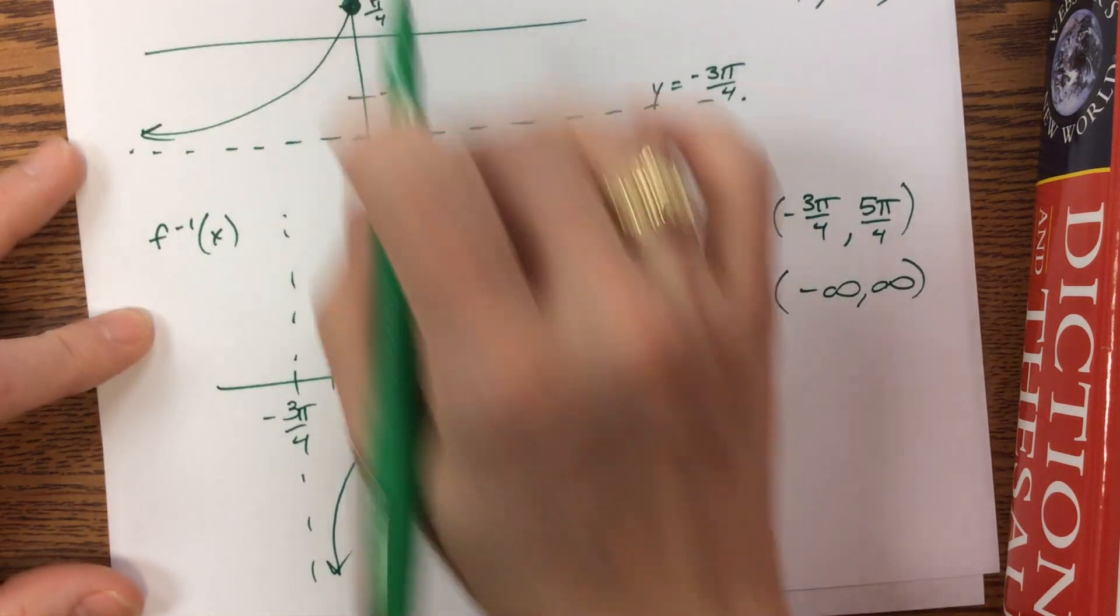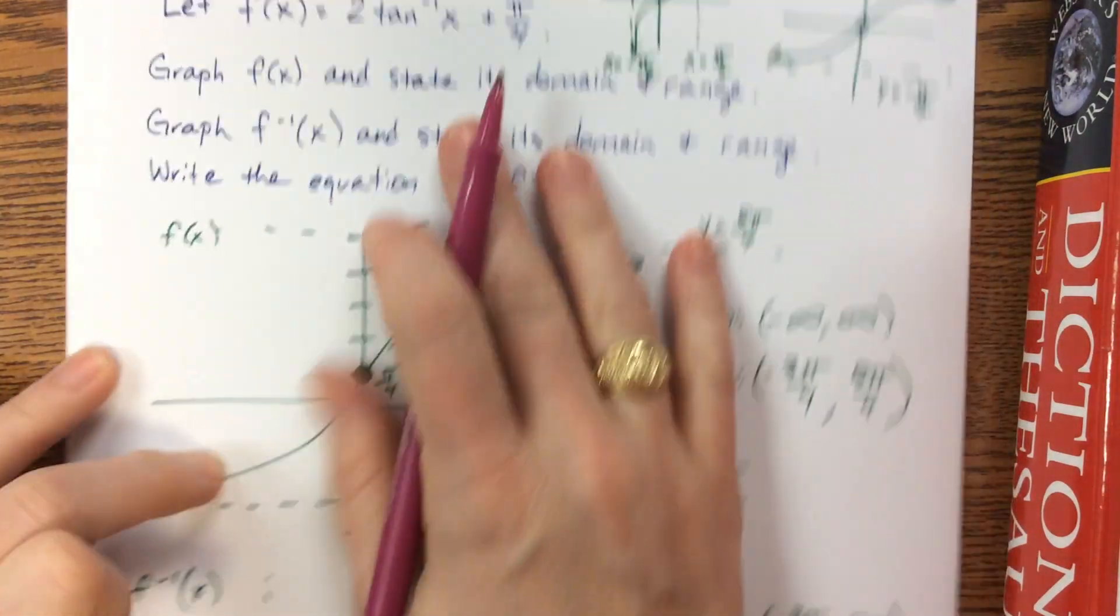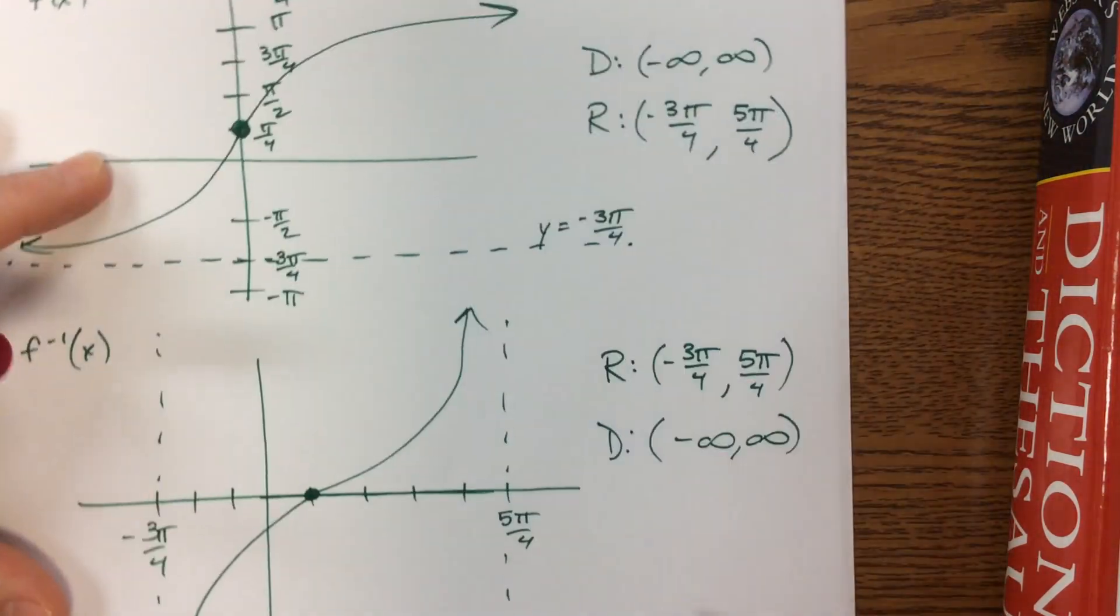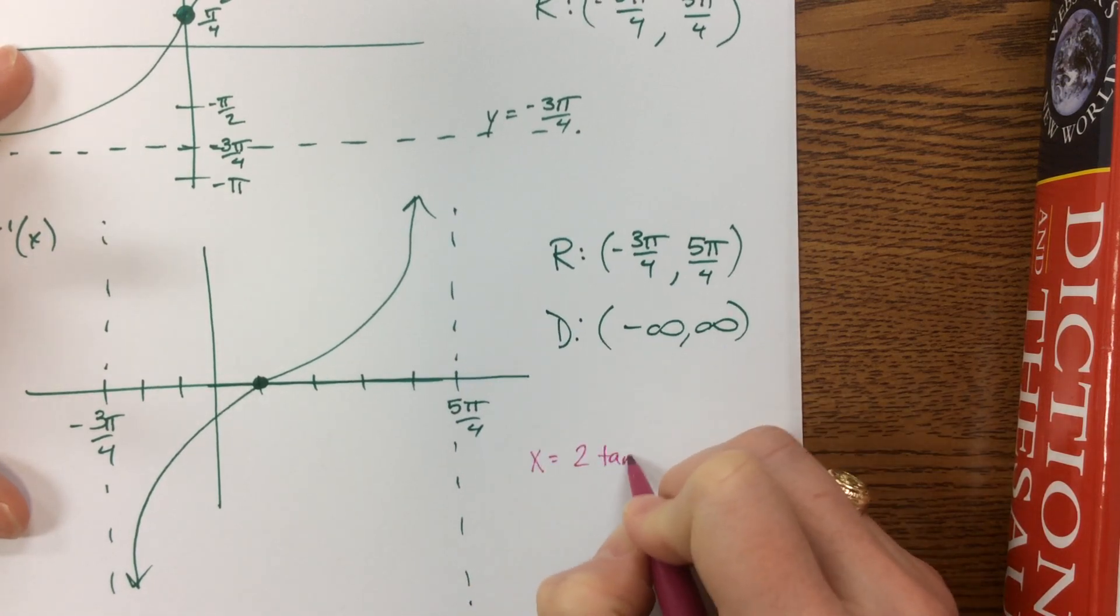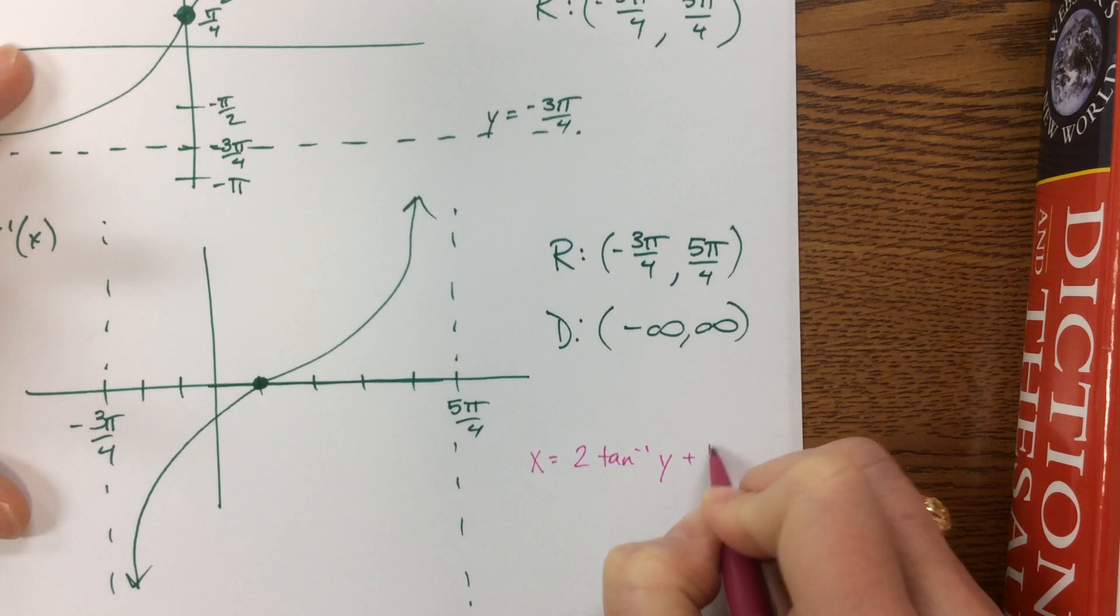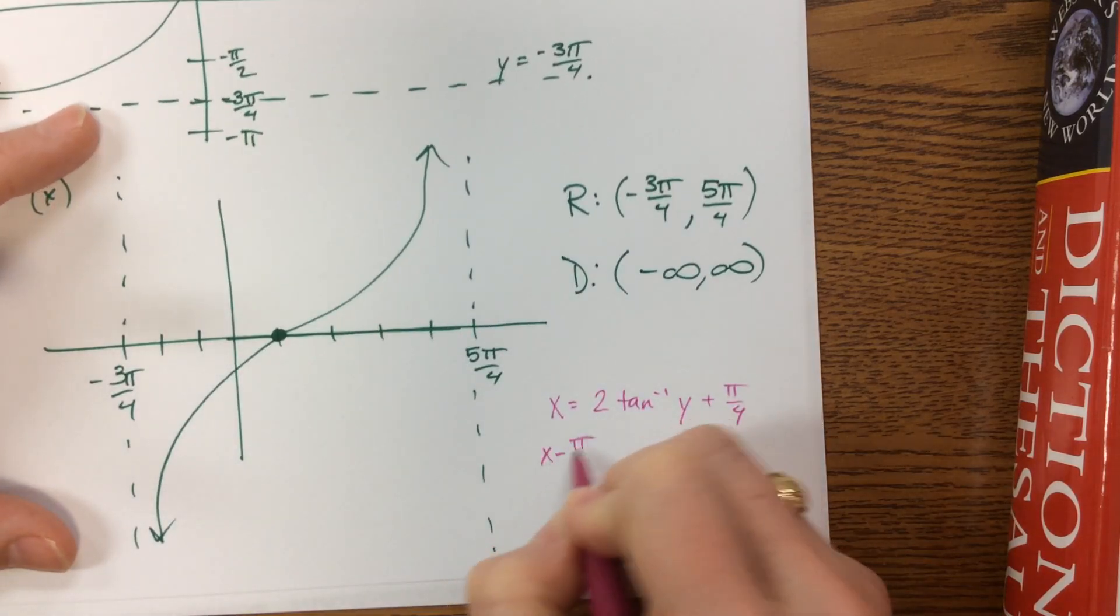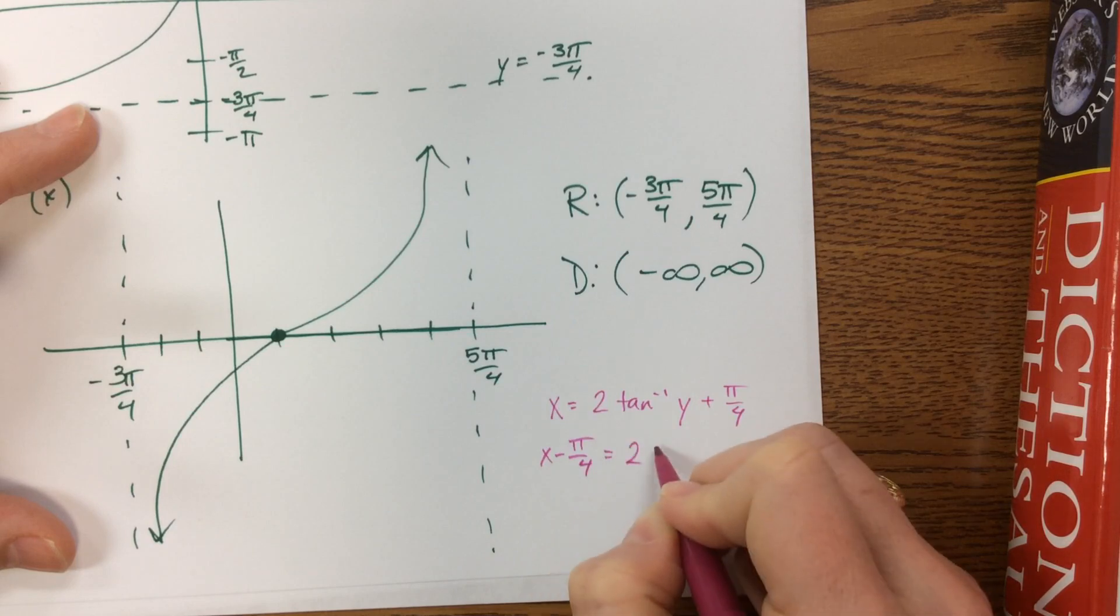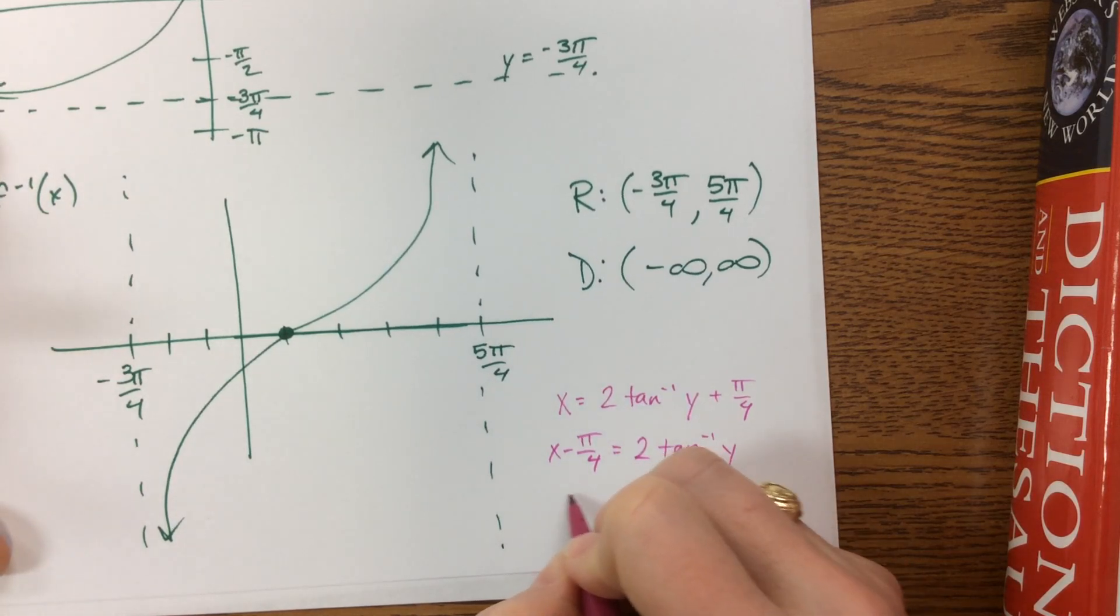Now the last thing that we want to do is we want to come up with that equation. So if I come back to the original equation and switch my x and y's, I would have x is equal to 2 inverse tangent of y plus π/4. So I'm going to subtract π/4, and then I'm going to divide by 2, or say 1/2 x minus π/4.